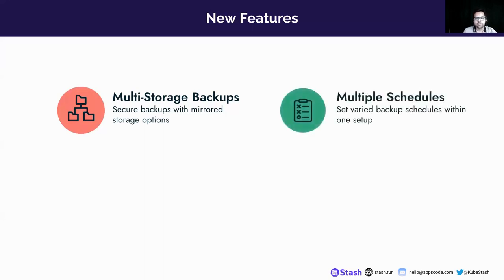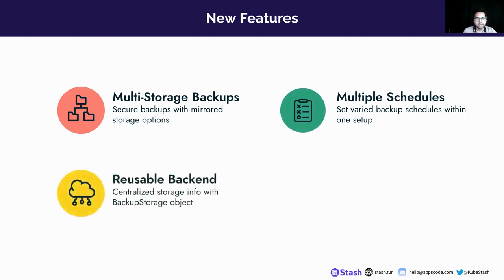Another feature is multiple schedules. You can now provide multiple schedules for the same backup. One benefit is that you can keep your monthly backup in one storage and the daily backup in a cheaper storage. Another is the reusable backend feature. Previously in Stash, you had to create the repository object every time you created a new backup, repeating the same cloud backend information again and again.